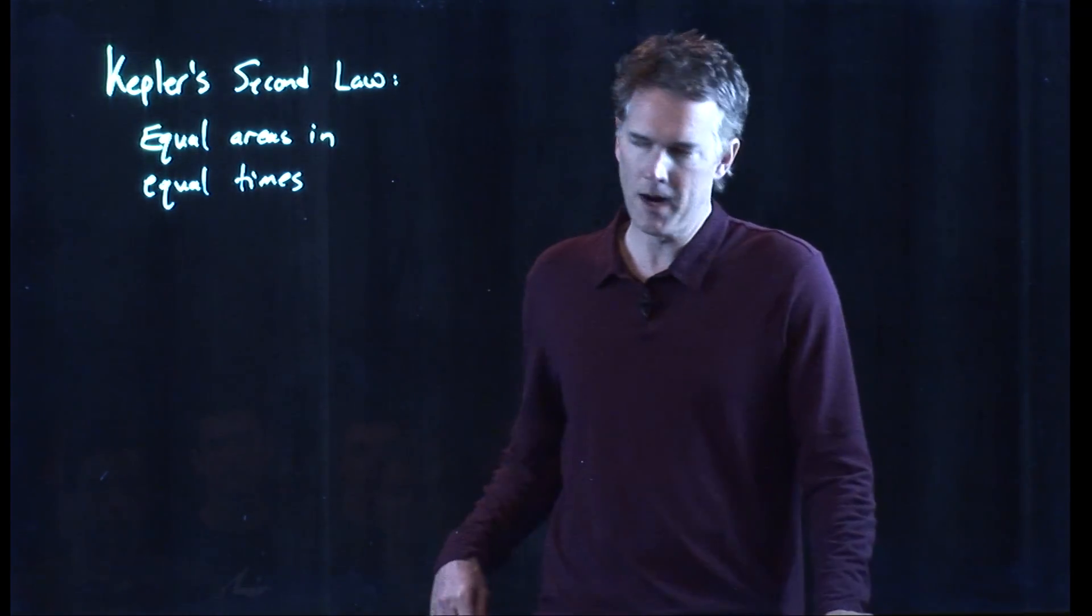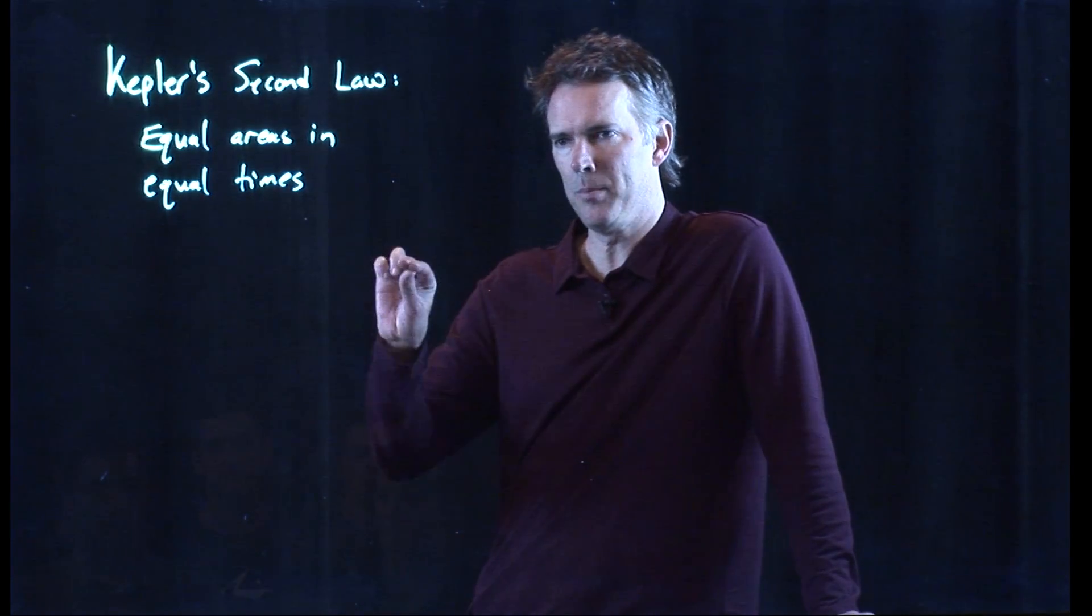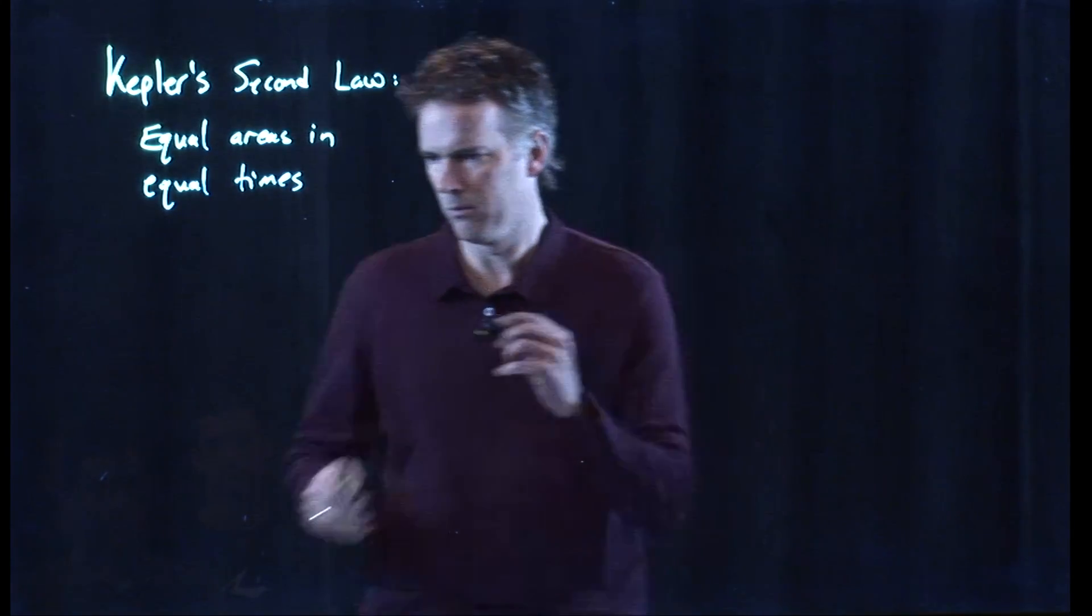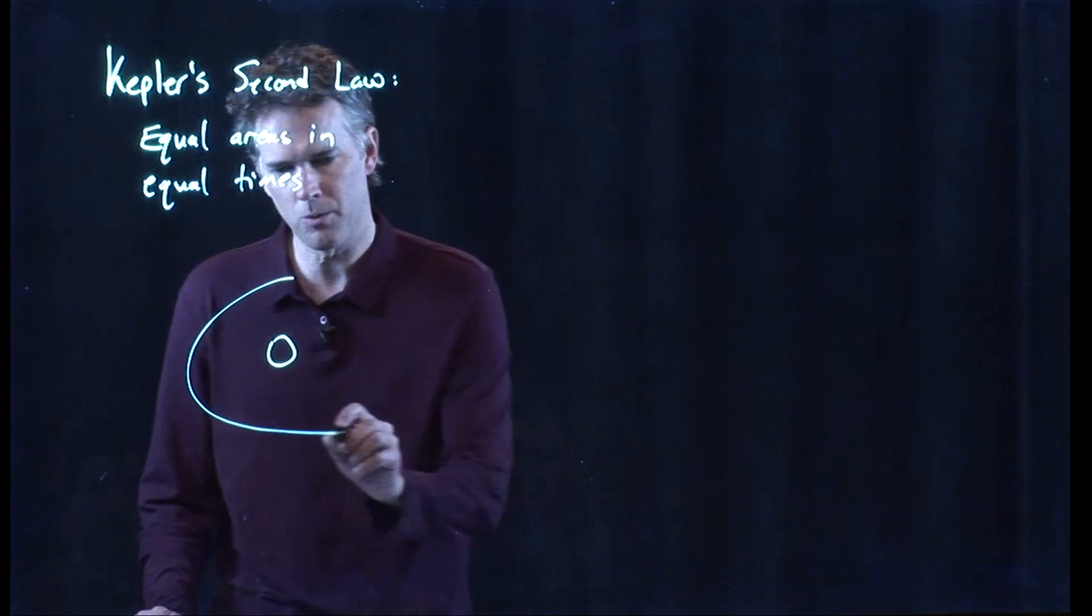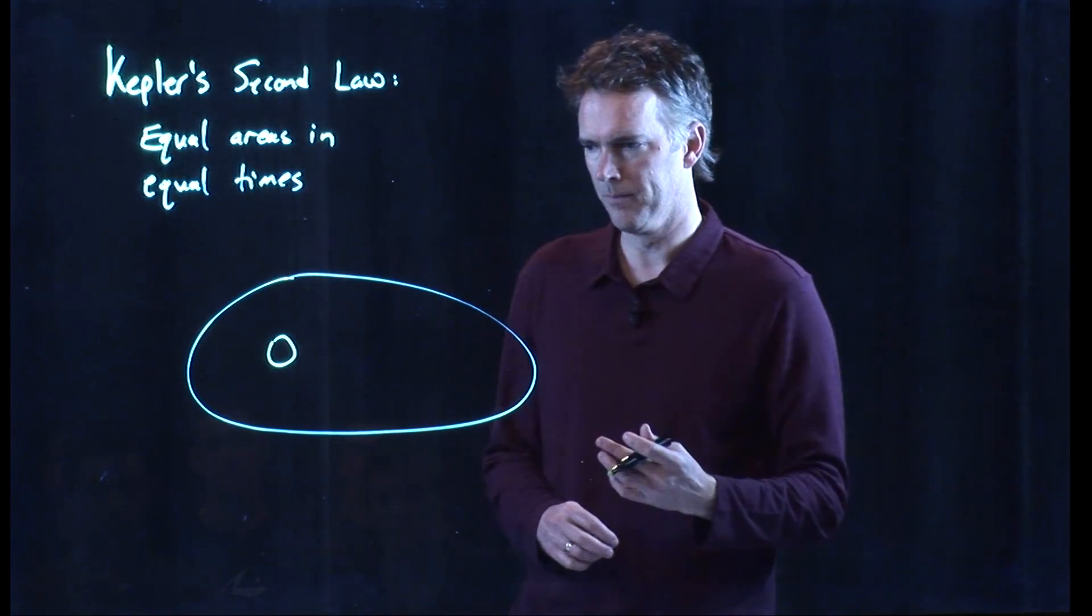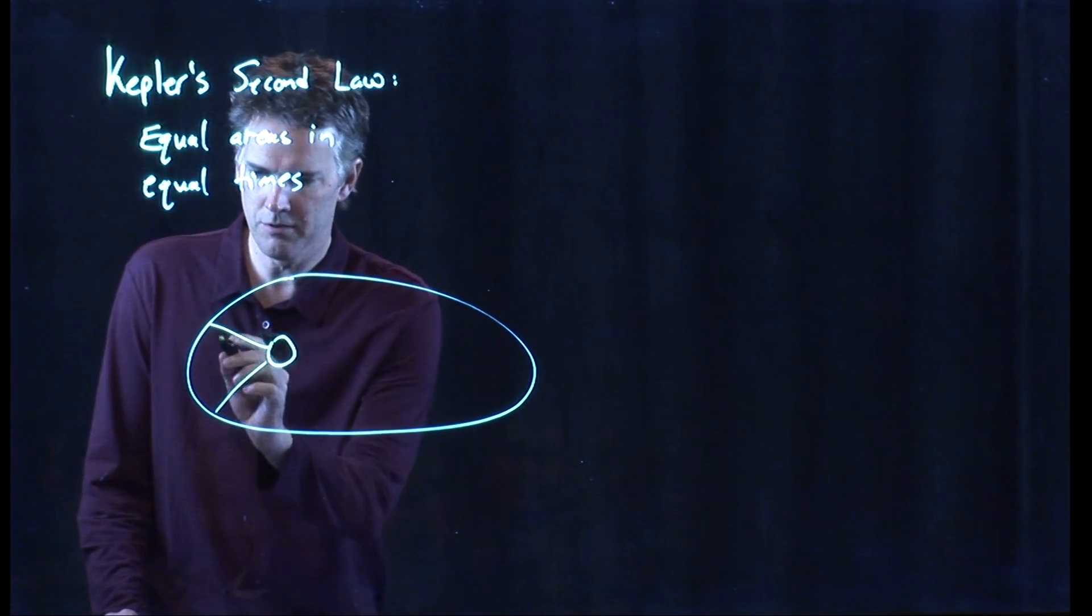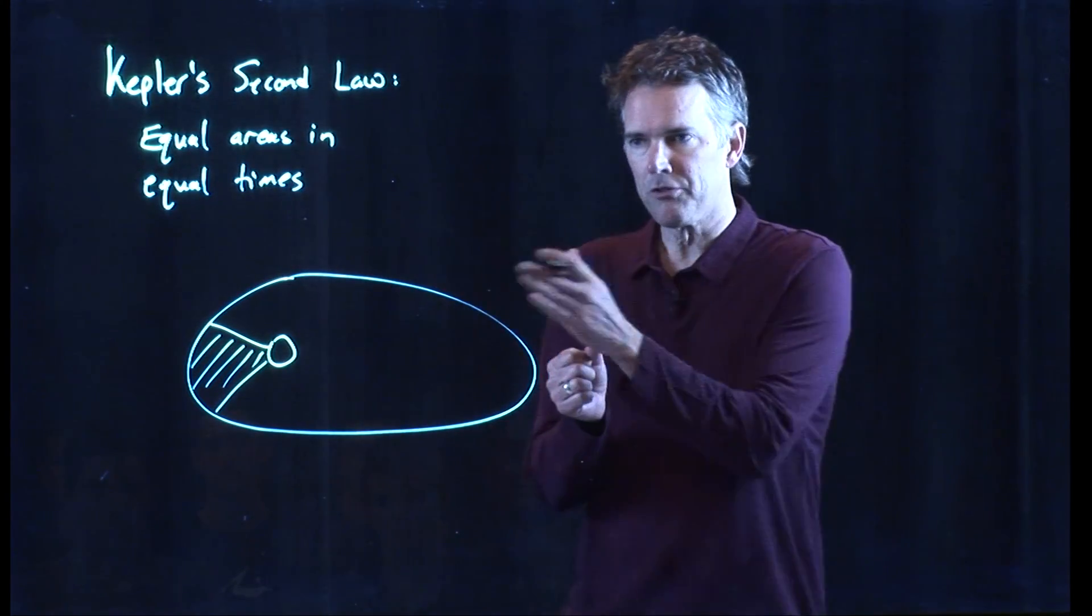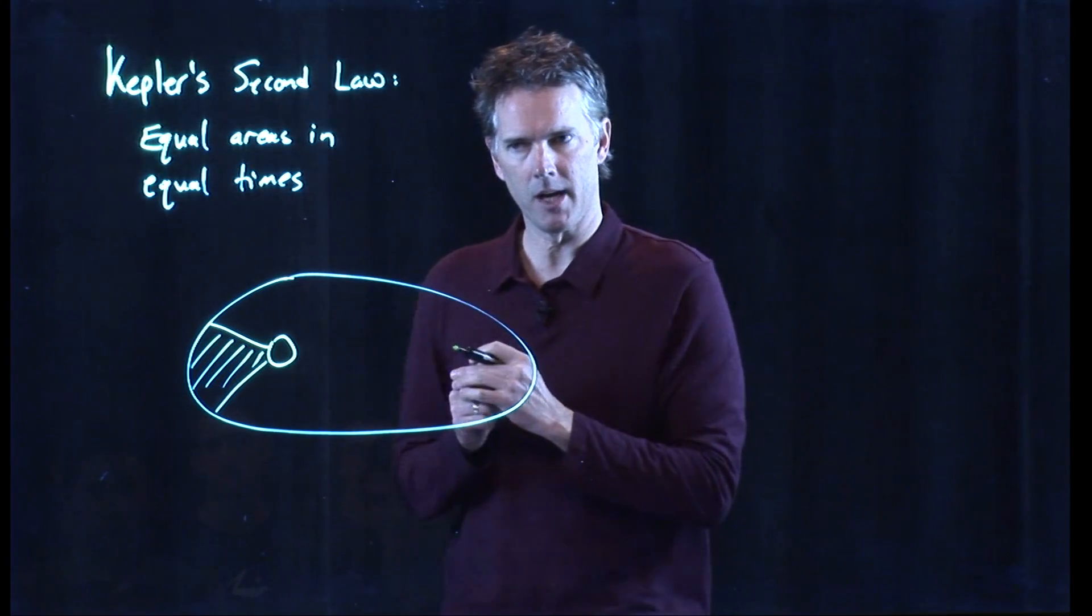Just to remind you what Kepler's second law was, he said that planets sweep out equal areas in equal times. What does that mean? Well, here's the Sun. Planets go around the Sun in an elliptical orbit. And if you set your watch and you measure some amount of time, say a month, that planet will sweep out a certain arc, and you can calculate what that area is.